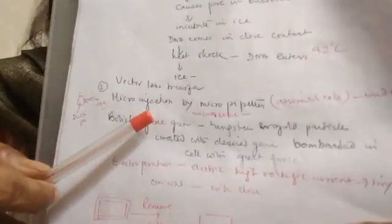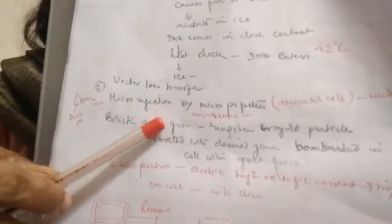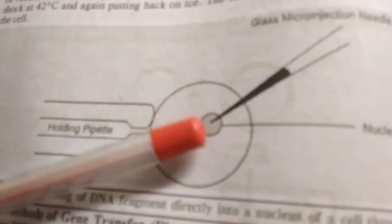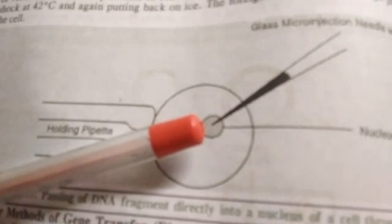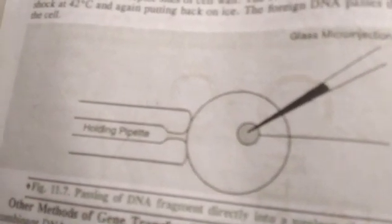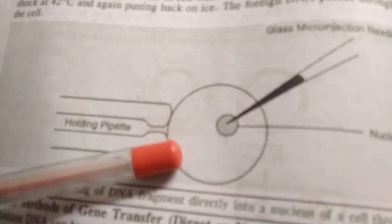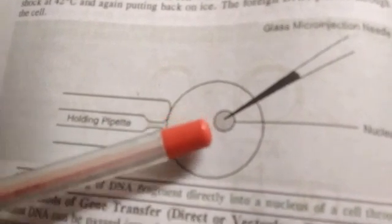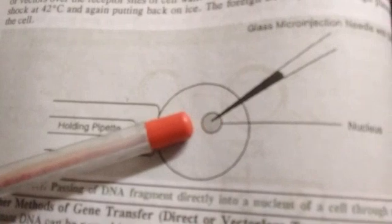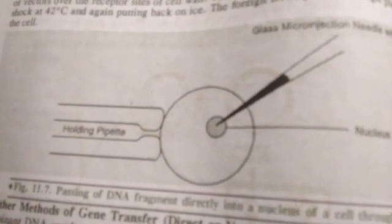So there are certain procedures also like microinjection. Microinjection is a procedure which is used in the vectorless system. You can see here this is the procedure for microinjection. It is very precise and is done absolutely under the microscope. It is mainly meant for the animal cells where a micro pipette is used which has suction, and finally the DNA is poured directly into the nucleus. A dye is used to observe whether the DNA has been poured in or not.